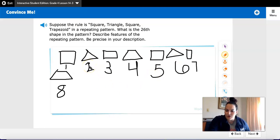But are the even ones all the same? 2 is a triangle, 4 is a trapezoid. 6 is a triangle, 8 is a trapezoid. No.